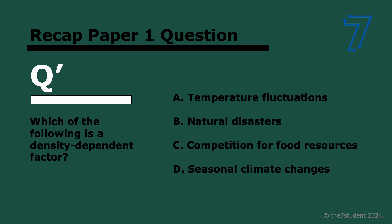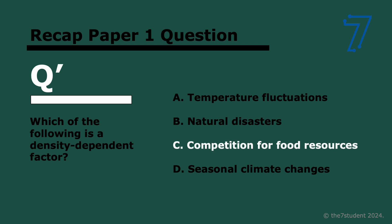Let's do some questions. Which of the following is a density-dependent factor? The answer is C — competition for food resources. Options A, B, and D are all density-independent; it doesn't matter how many individuals there are. But competition for food resources is worse the bigger the population, because there are fewer resources per individual.